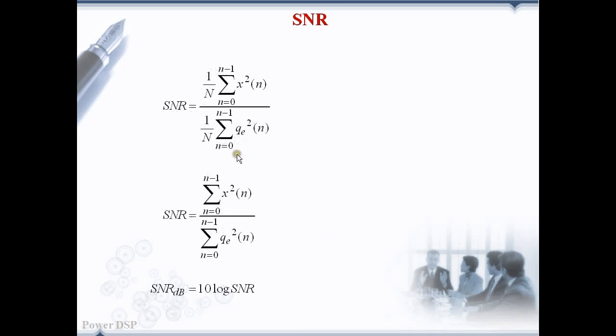We can practically calculate the SNR error by the equation given here. x of n is the nth sample value and qe of n is the quantization error after quantizing the sample x of n.